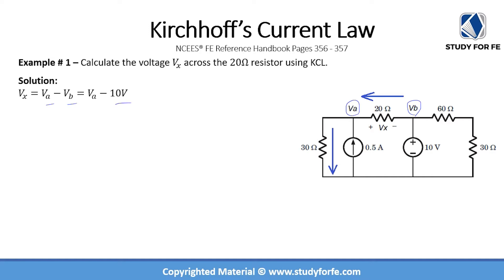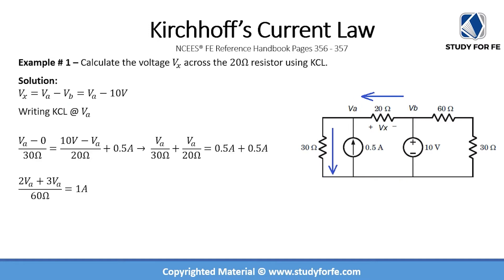Another thing to note is that VB is actually equal to 10 volts. Although there is no ground indicated in this circuit, you can assume a virtual ground because at this node all of the nodes form a common node. Once you consider it as a virtual ground, you can clearly see that VB will be equal to 10 volts. So we can write a KCL at node A.